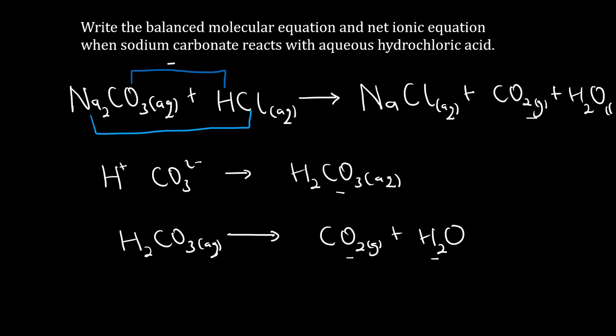This is our molecular equation, but we need a balanced one. Since we have a 2 on sodium, we put a 2 on sodium chloride so that sodium is balanced. In doing so, chlorine also becomes 2, so we add a 2 on hydrochloric acid. This gives us a balanced molecular equation for sodium carbonate reacting with hydrochloric acid.